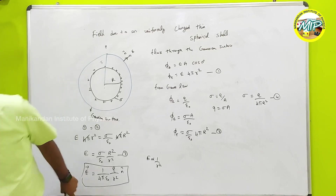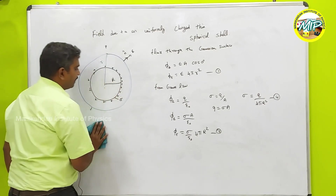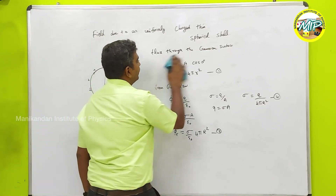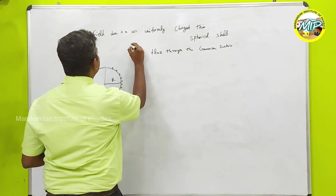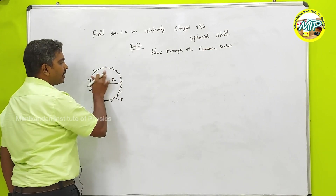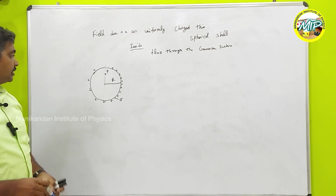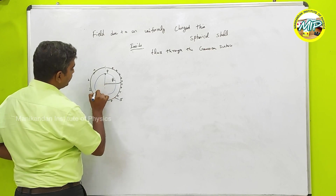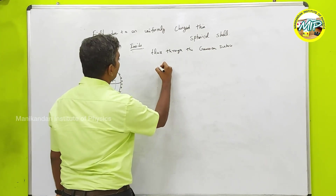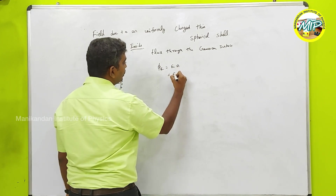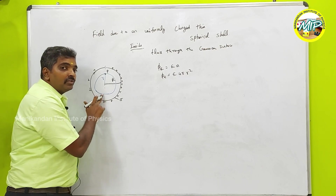For the second case — inside the spherical shell — I am going to consider a Gaussian surface inside the shell at some radius r (lowercase). I want to find the electric field at some random point P inside. The flux through this inner Gaussian surface is φ_E equals E into 4πr².